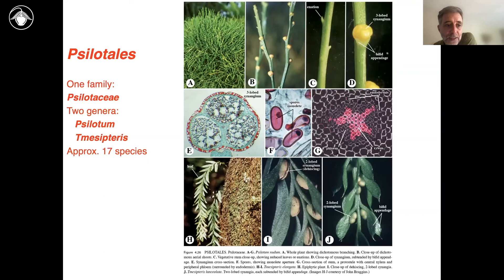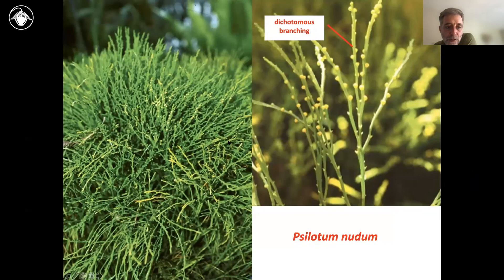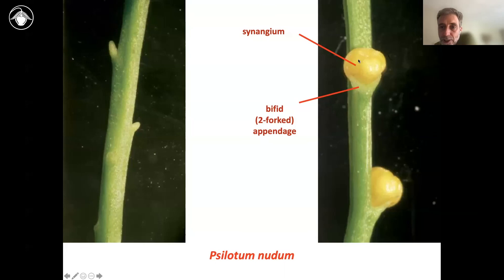The Ophioglossaceae are most closely related to another very strange group called the Psilotales. We're only going to talk about the genus Psilotum — there are only two genera total, so it's a very small group. Psilotum looks like a bunch of green twigs. It has its eusporangia fused three at a time into specialized structures called synangia. Here's a close-up showing a synangium with its three fused sporangia and this weird bifid appendage thought to be all that remains of its leaves. Psilotum basically has no leaves and no roots — just this branchy, twiggy thing bearing synangia.